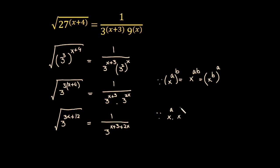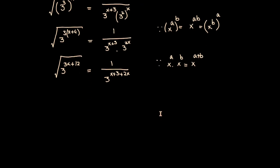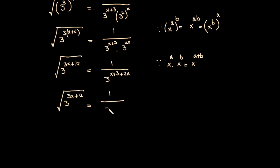Since the bases are equal, you can combine the powers by adding them. So in the next step this is equal to 3 raised to the power 3x plus 12 under root, equal to 3 raised to the power 3x plus 3 on the right-hand side.